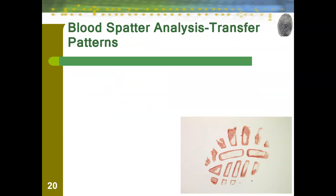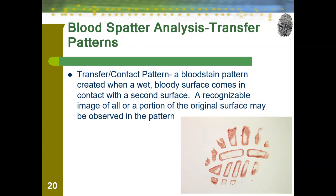Moving on to our transfer patterns, the first one is the transfer contact pattern — a bloodstain pattern created when a wet, bloody surface comes in contact with a second surface. A recognizable image of all or a portion of the original surface may be observed. In our picture here, you can see this is clearly the ball of someone's shoe. They must have walked through blood and then walked somewhere else. We can also tell that the blood was already there before this person stepped in it, so whatever event occurred had already happened.